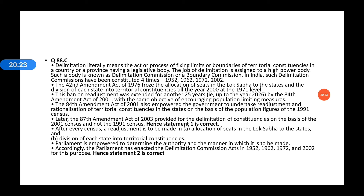The 42nd Amendment Act of 1976 froze the allocation of seats in the Lok Sabha to the states and the division of each state into territorial constituencies till the year 2000, at the 1971 level. The ban on readjustment was extended for another 25 years up to 2026 by the 84th Amendment Act of 2001, with the same objective of encouraging population limitation measures. The 84th Amendment Act of 2001 also empowered the government to undertake readjustment and rationalization of territorial constituencies in the states on the basis of population figures of the 1991 census.